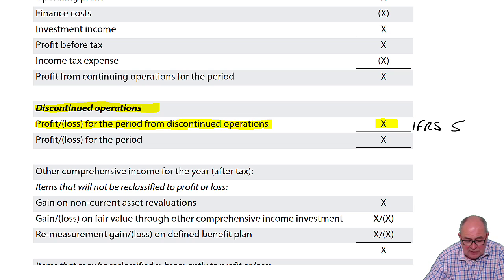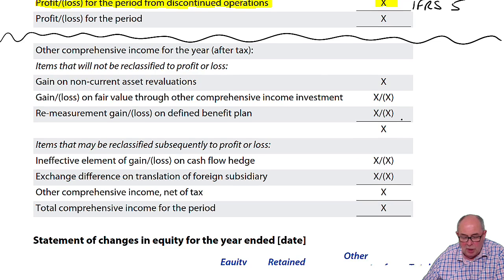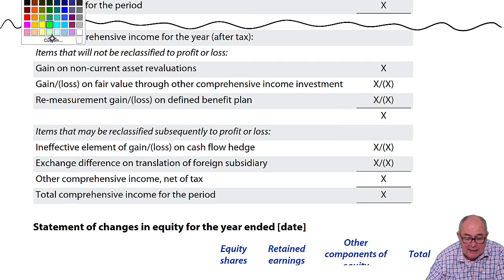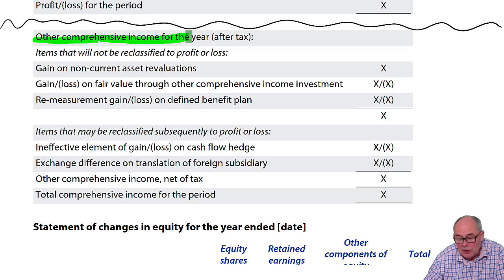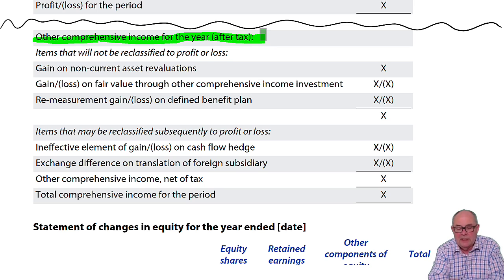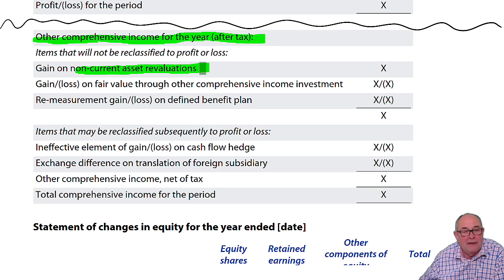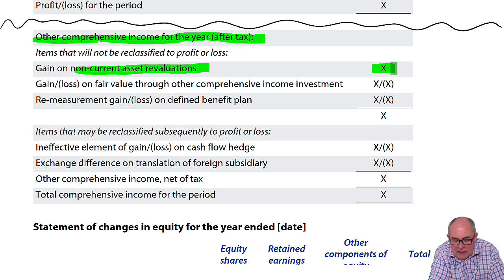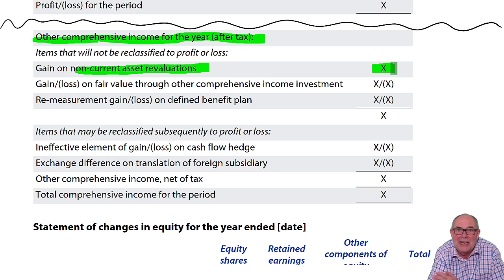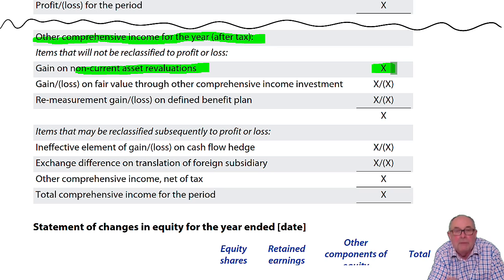Underneath the profit and loss is the other performance statement: other comprehensive income. When you did your earlier studies, you didn't really think about this much, but it was used for gains which cannot be reported in the P&L, like fixed asset or non-current asset revaluations if you revalue your PPE. It is used for that, but you'll notice it's used for a lot of other things that you'll be talking about as you work through the SBR strategic business reporting syllabus, so you'll probably need to keep looking back at this.